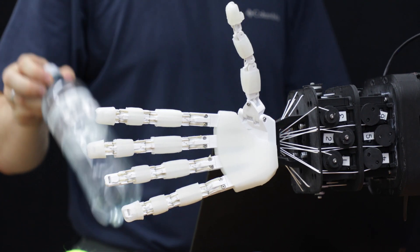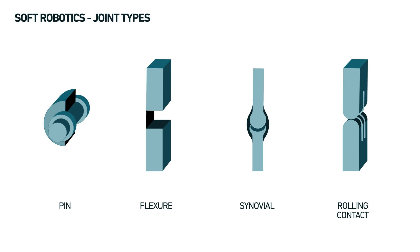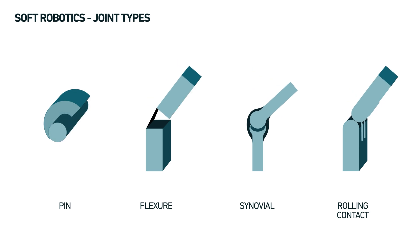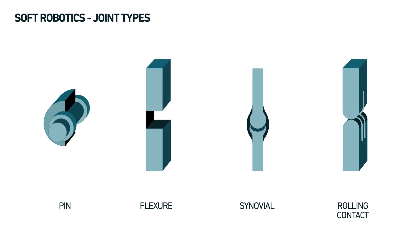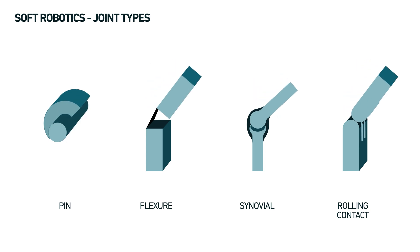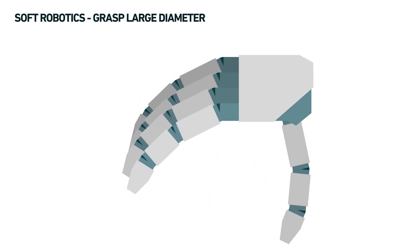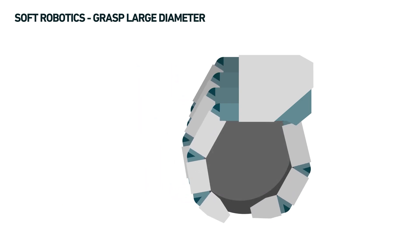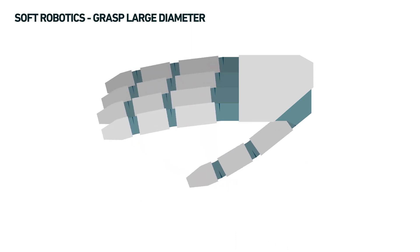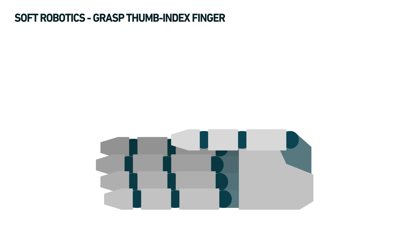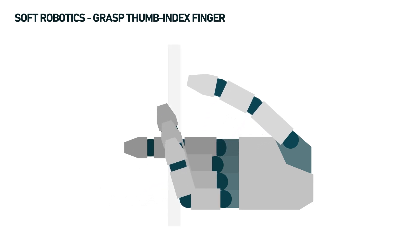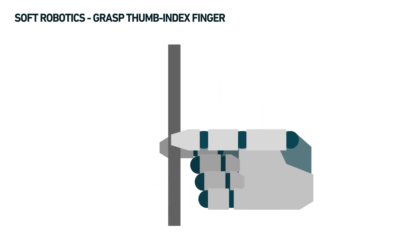According to Feix's taxonomy, grasps can be categorized into a range of precision to power grasps, with intermediate grasp types combining precision and power. Notice that the thumb replicates the precision of the human thumb's opposable motion. Its design significantly impacts grasping capabilities and is used in most grasp types of Cutkosky's and Feix's categorizations.